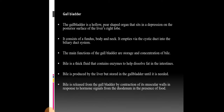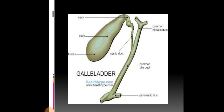The next organ is the gallbladder. The gallbladder is a hollow, pear-shaped organ that sits in a depression on the posterior surface of the liver's right lobe. It consists of a fundus, body, and neck, and empties via a cystic duct into the biliary duct system. The main function of the gallbladder is storage and concentration of bile. Bile is a thick fluid that contains enzymes to help dissolve fat in the intestines. Bile is produced by the liver but stored in the gallbladder until needed. Bile is released from the gallbladder by contraction of its muscular walls in response to hormone signals from the duodenum in the presence of food.